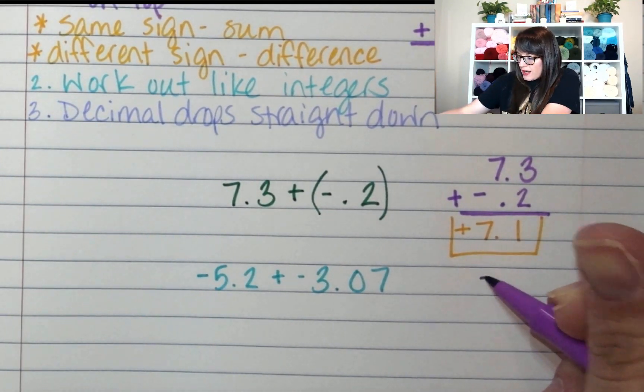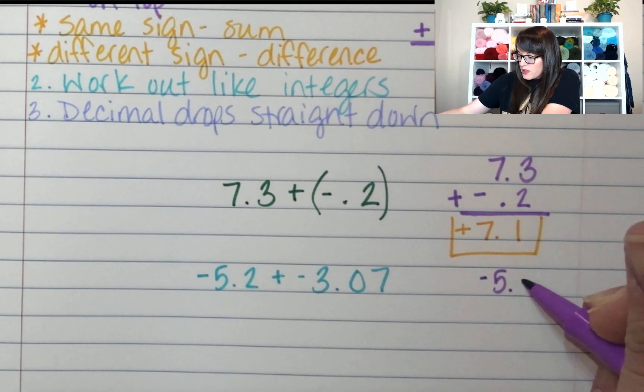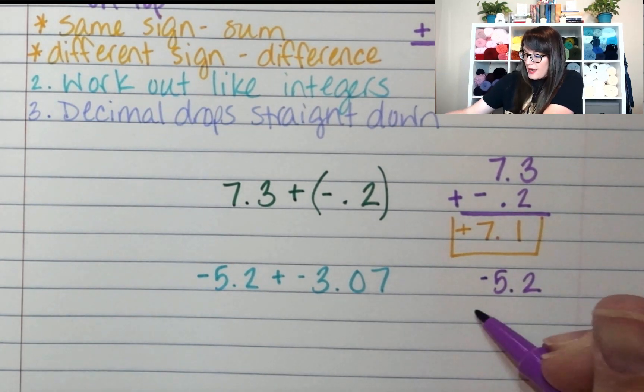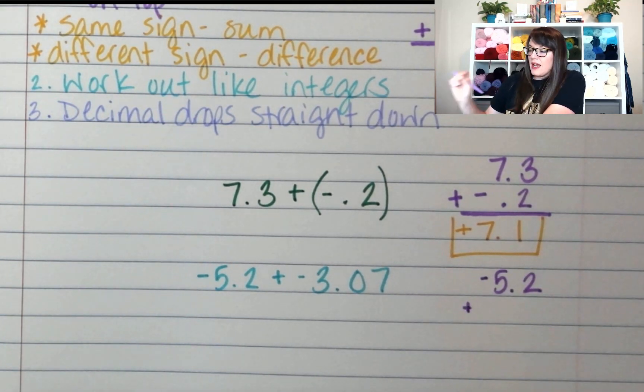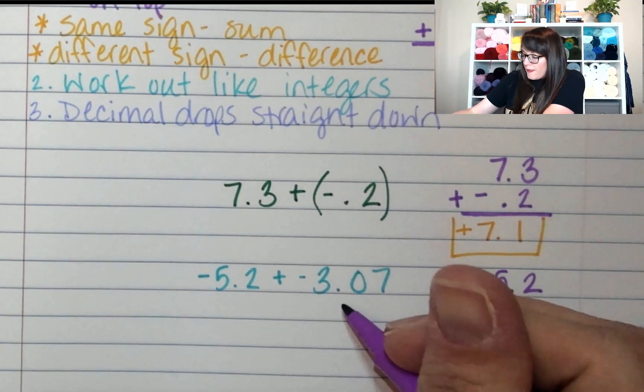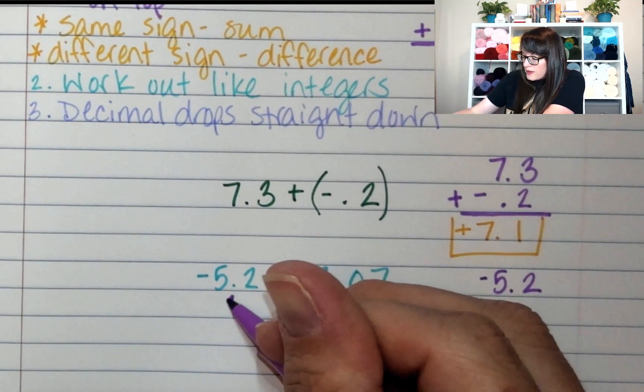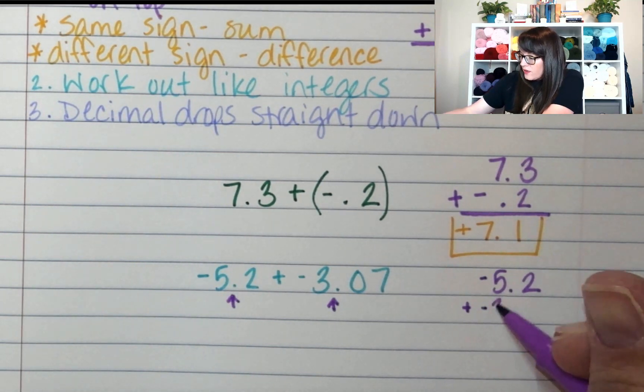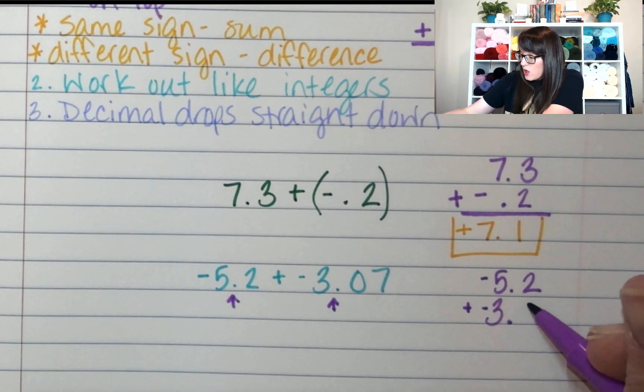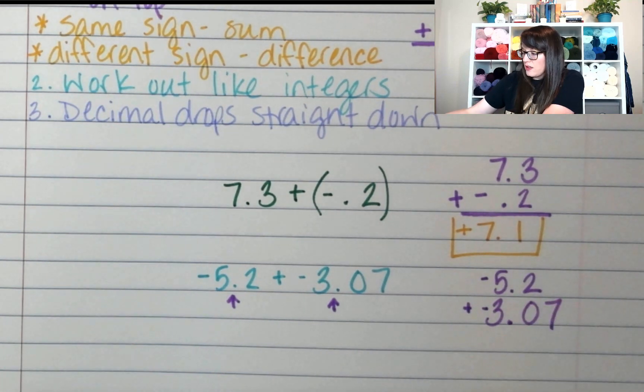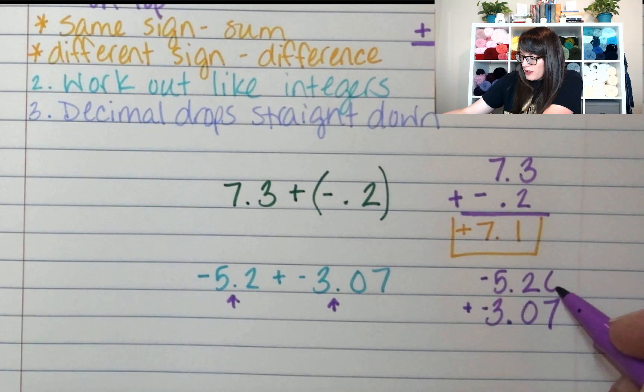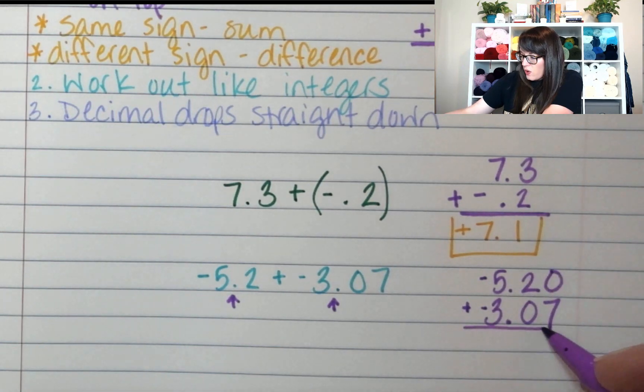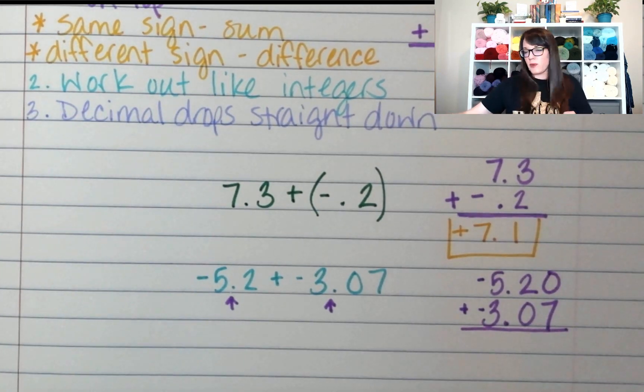So we've got negative 5.2, and I'm adding. Now, here's where we don't want to mess up. This decimal needs to line up with this decimal. So we're going to put negative 3.07. Now, there's this empty space up here. We can add a placeholder 0 just to hold that so that it makes it easier to work it out.